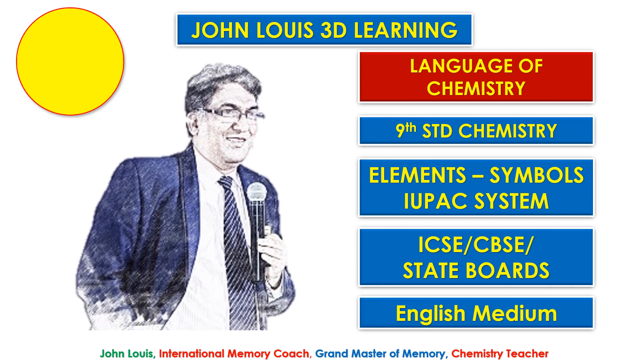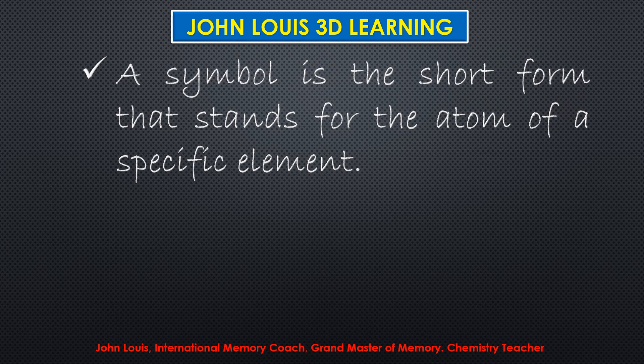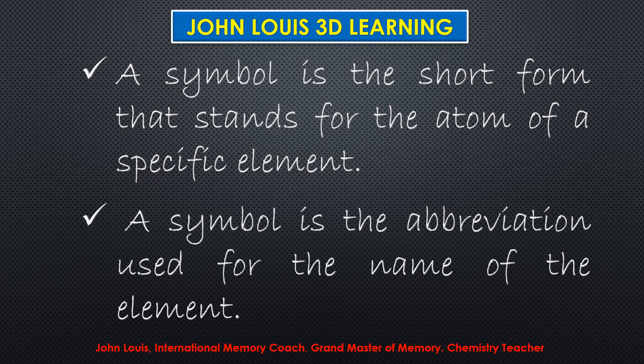First of all, what is a symbol? A symbol is a short form that stands for the atom of a specific element. We have seen lots of symbols based on the Berselius system in the last video — H for hydrogen, O for oxygen. A symbol can also be defined as the abbreviation used for the name of the element.